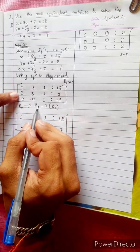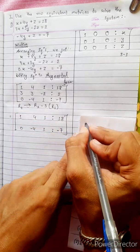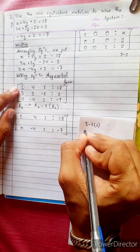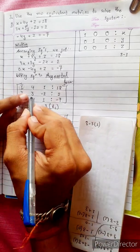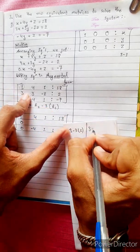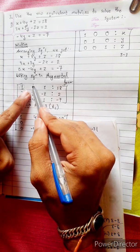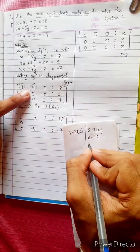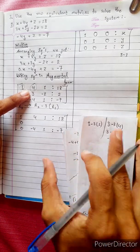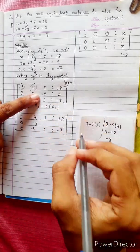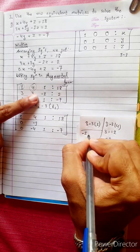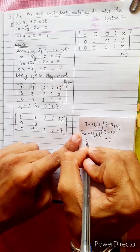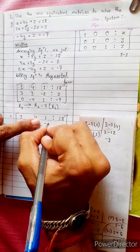I will change the second row. R2 equals R2 minus 3 times R1. R1 first element: 3 minus 3 times 1 equals 0. Next element: 3 minus 3 times 4 equals minus 9. Then: minus 2 minus 3 times 1 equals minus 5. Right-hand side: 2 minus 3 times 18 equals minus 52.